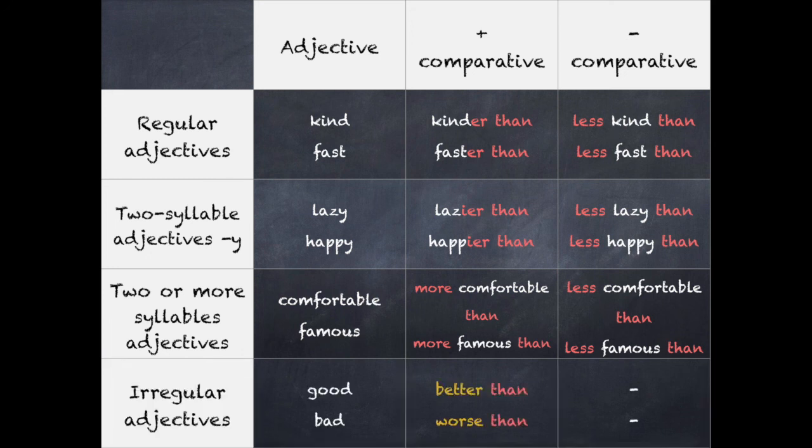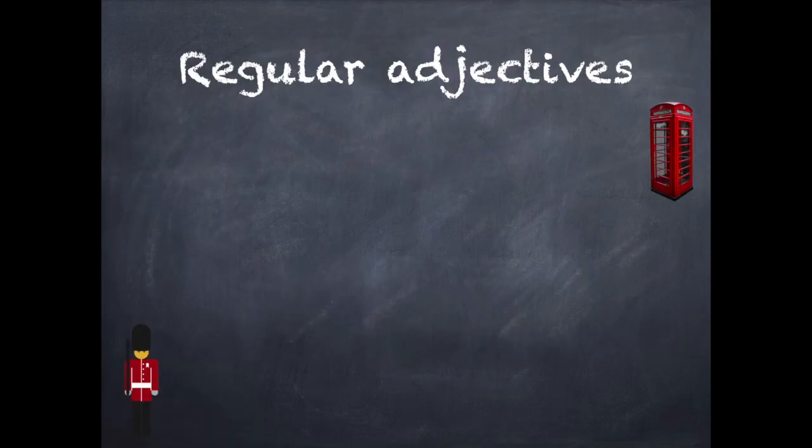We have some irregular adjectives like good or bad. The comparative form will be better than or worse than. Now we are going to see some examples in a few sentences.